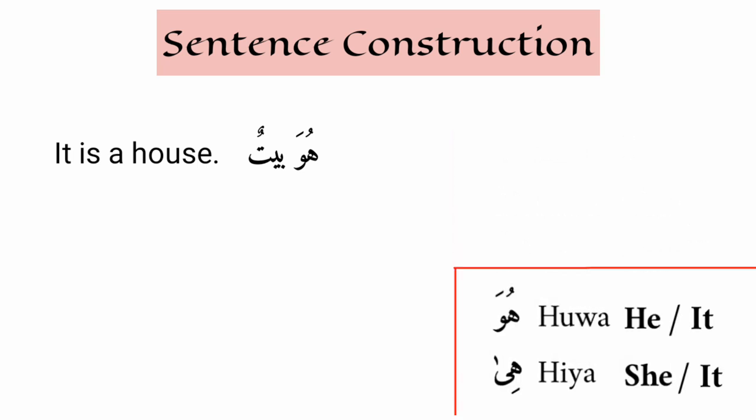It is a house — huwa baytun. It is a tree — hiya shajaratun. Why? Shajara is feminine because it has ta marbuta at the end, so hiya shajaratun, not huwa shajaratun.